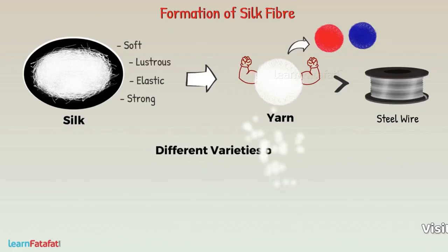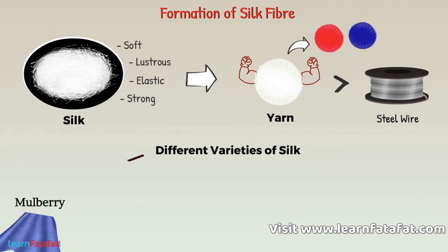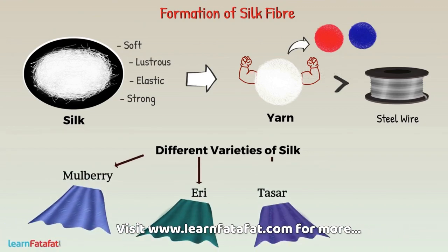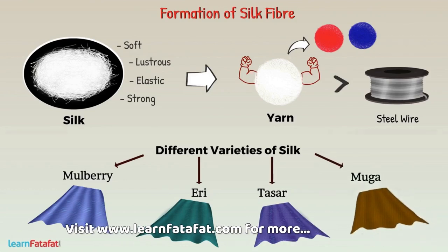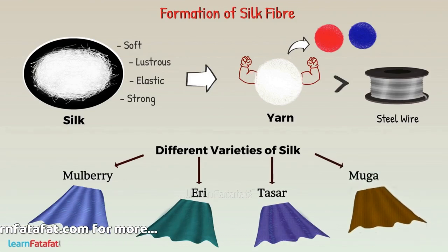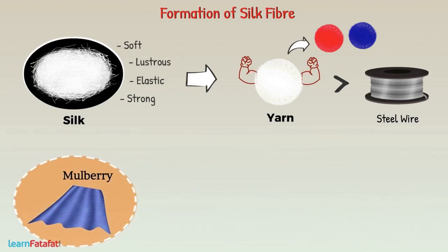There are different varieties of silk, of which Mulberry, Ari, Tassar and Muga silk are of commercial importance. Most commercial silk is Mulberry silk, which is a very fine white fiber.